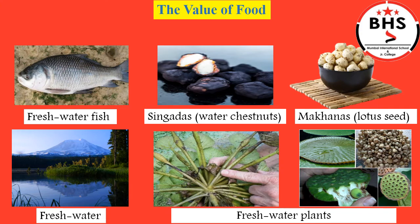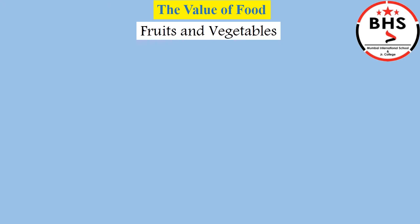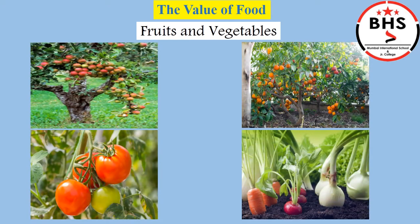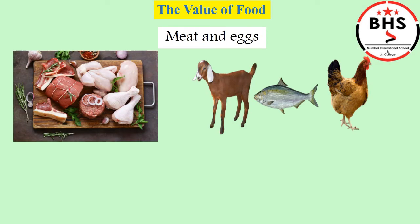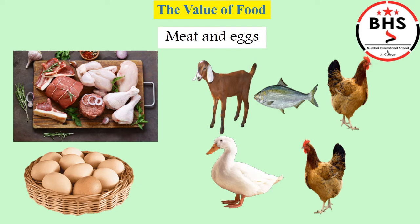Too much hard work has to be done to collect, clean, dry, store, and transport them. We get fruits and vegetables from trees and plants. Some people have orchards for growing fruit crops — these are like fruit gardens — while some people have vegetable farms. We get meat from various animals like goat, fish, hen, etc. We get eggs from duck and hen.